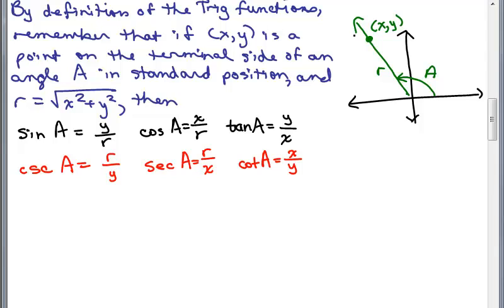What you're looking at here is a review of the definition of the trig functions. If we have an angle A in standard position and its terminal side passing through the ordered pair (x, y), the length from the origin to that point (x, y) is called r, where r is the square root of x squared plus y squared. Then we defined sine, cosine, tangent, secant, cosecant, and cotangent in terms of x, y, and r.